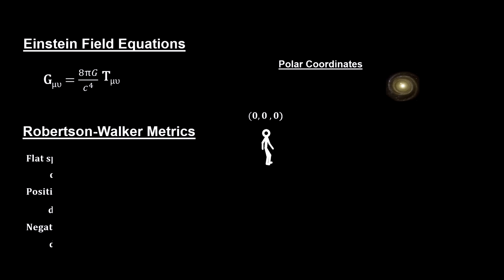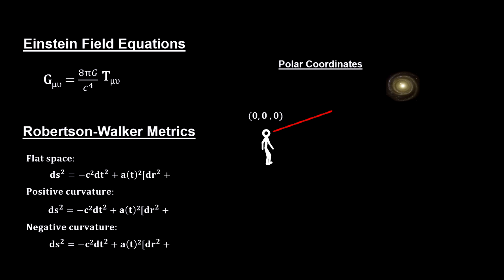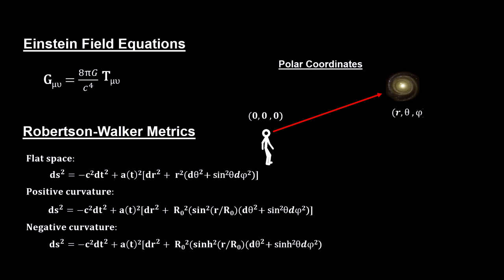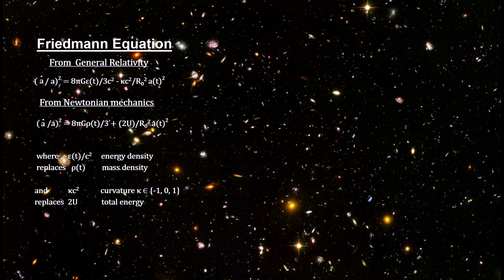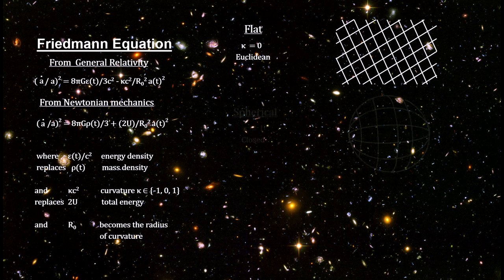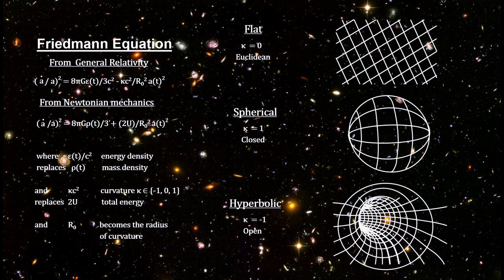Understanding the evolution of the universe is what cosmology is all about. Up to this point we've used Newtonian equations, but for a full picture we need Einstein's general theory of relativity, which includes mass, energy, and pressure, plus the curvature of spacetime given its mass-energy contents. The Friedmann equation developed from this starting point is similar to the Newtonian version with two key differences: mass density is replaced by energy density epsilon, and total energy is replaced by the radius of curvature and a curvature constant of −1, 0, or +1.